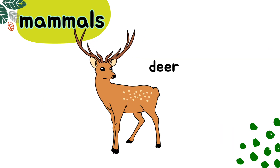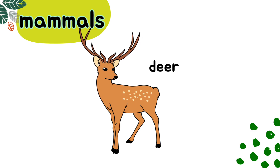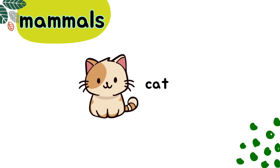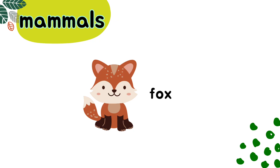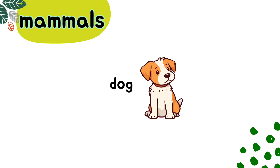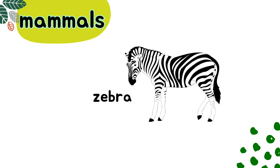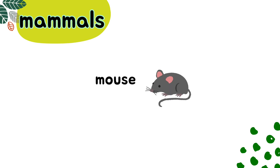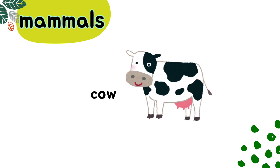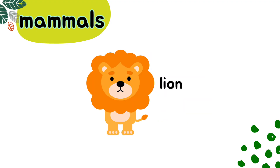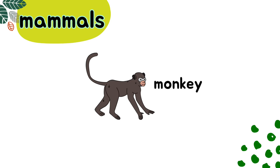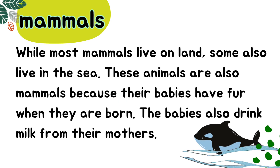Some examples of mammals are: deer, cat, fox, dog, zebra, mouse, cow, lion, and monkey. While most mammals live on land, some also live in the sea.